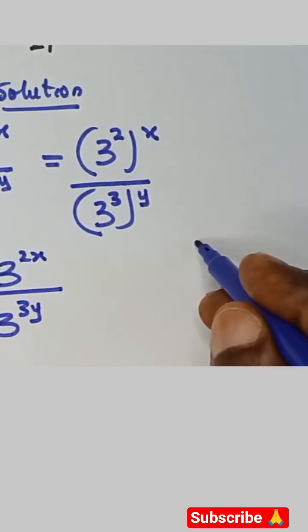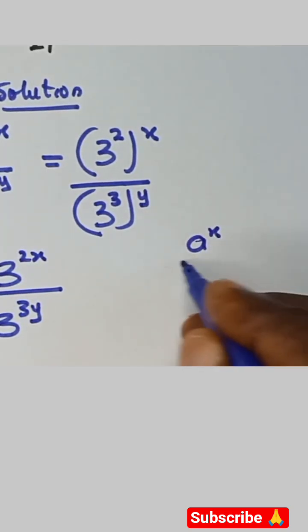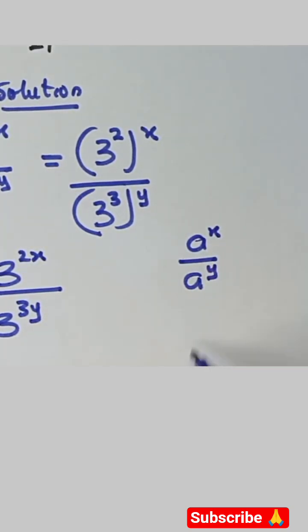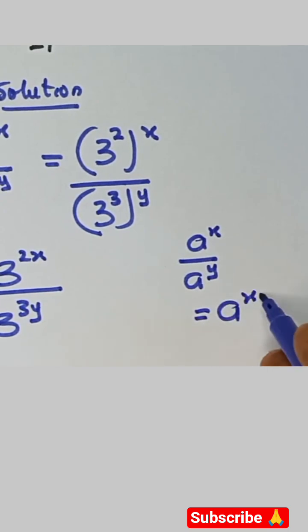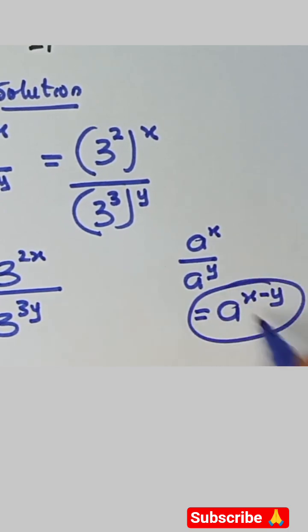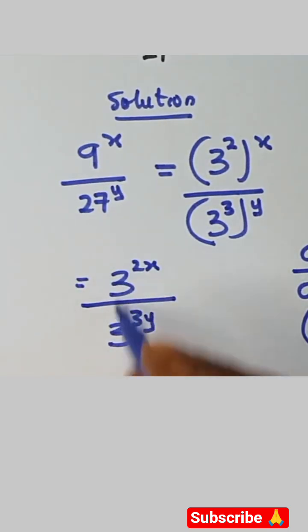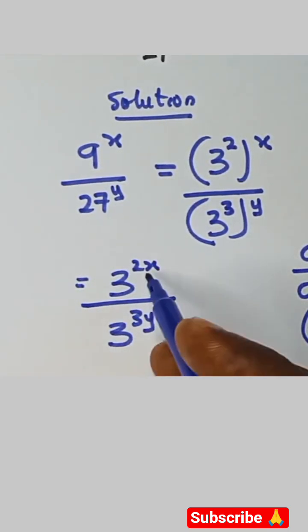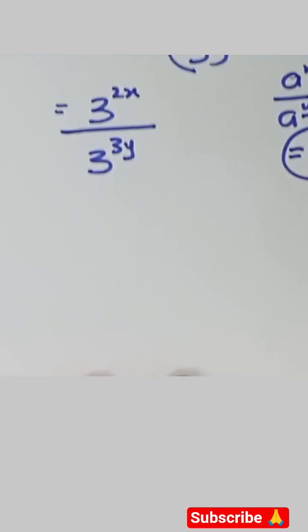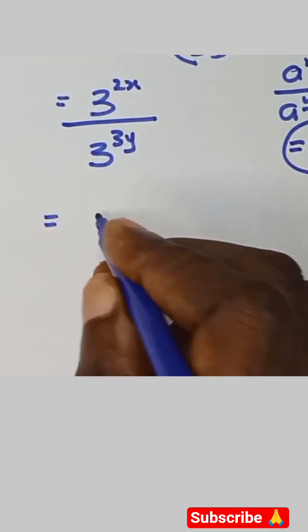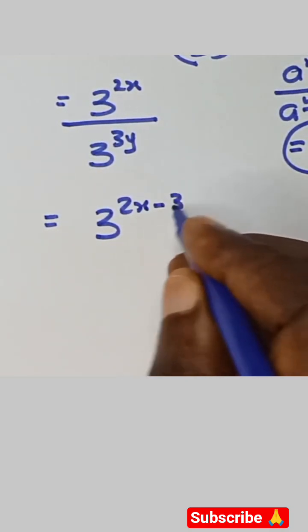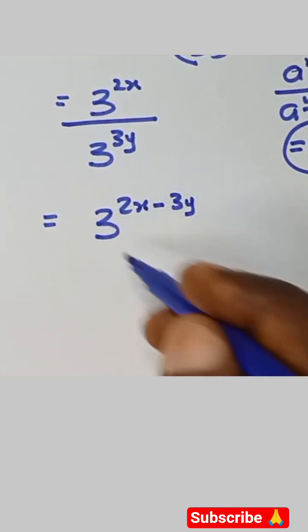Now, one of the laws of exponents is that a raised to power x over a raised to power y gives us a raised to power x minus y. So since we have the same base, we subtract the powers and get 3 raised to power 2x minus 3y.